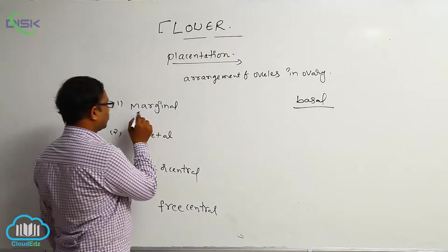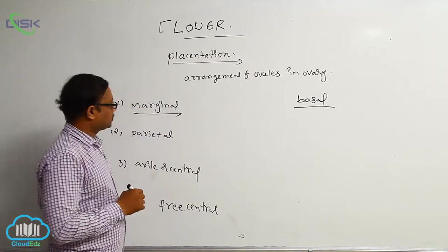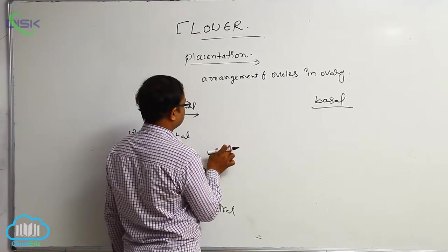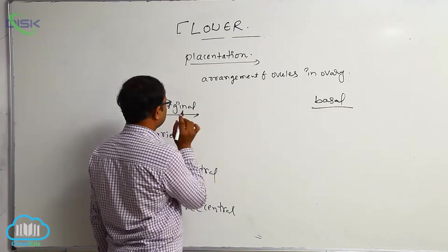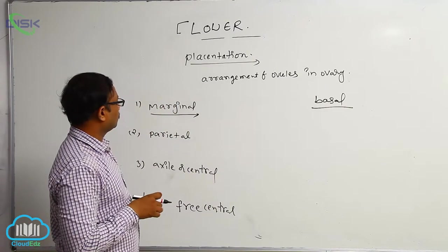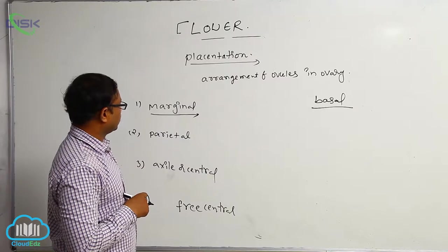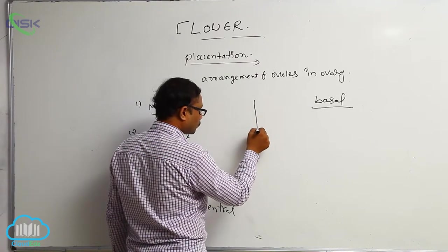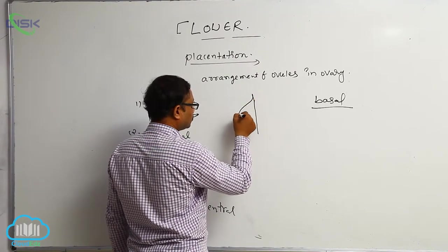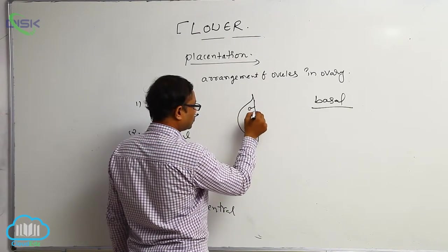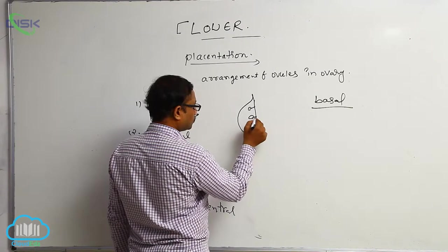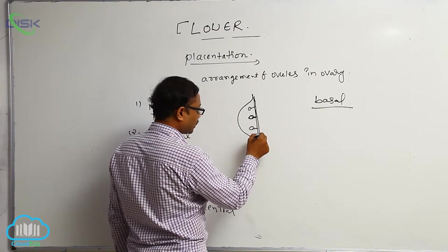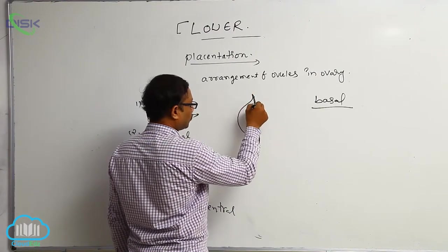Marginal Placentation means ovules are attached to the ventral suture of the ovary. In marginal placentation, ovules are connected to the ventral foldings of the ovary — that is, the ventral side foldings.